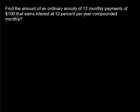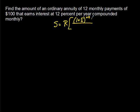Our first problem reads: find the amount of an ordinary annuity of 12 monthly payments of $100 that earns interest at 12% per year compounded monthly. Our formula for this is going to be similar to some of the last formulas we had with compound interest. It looks something like this: S equals R times the quantity of 1 plus r over n raised to the nt power, minus 1, all over r over n.